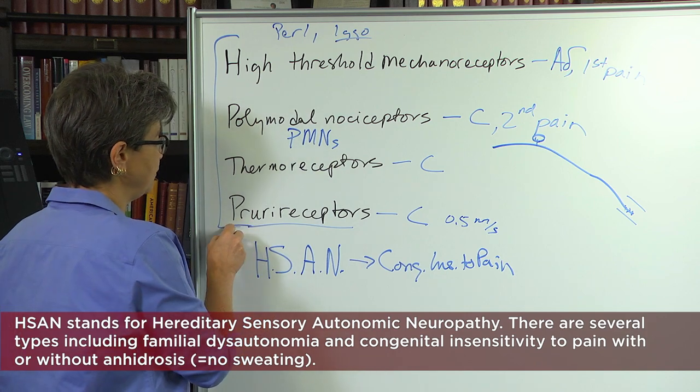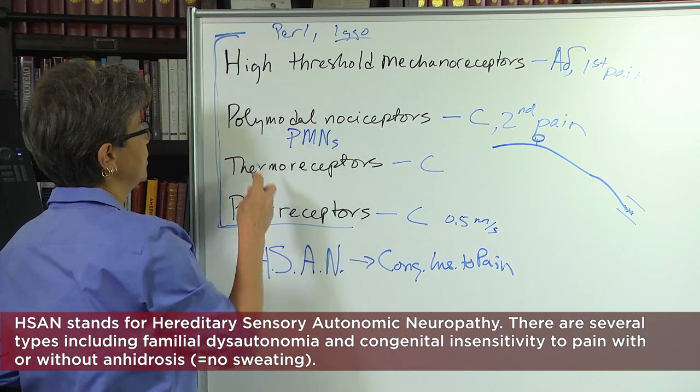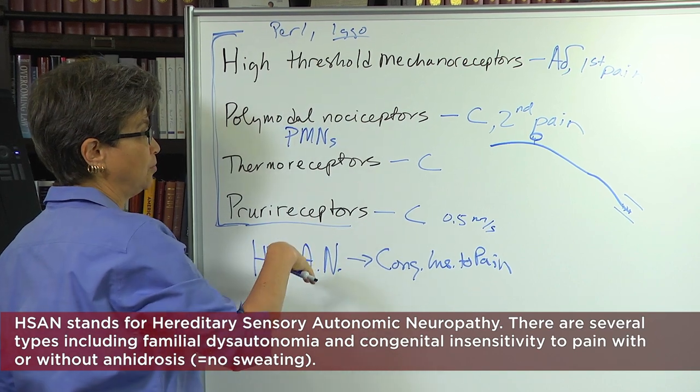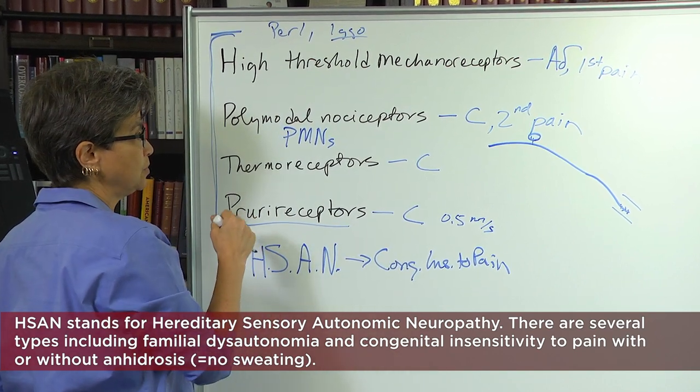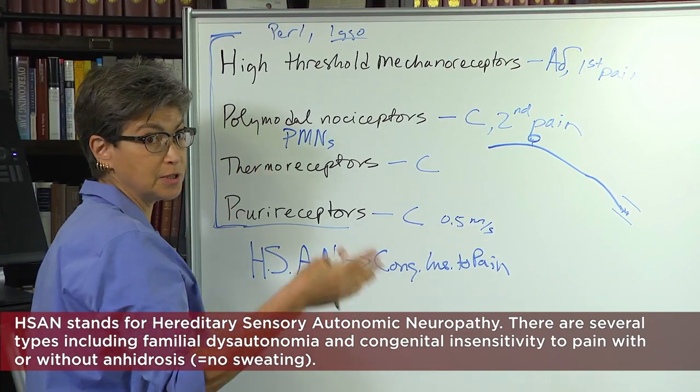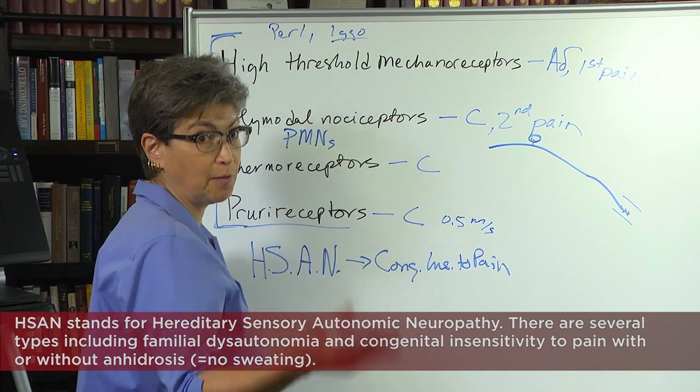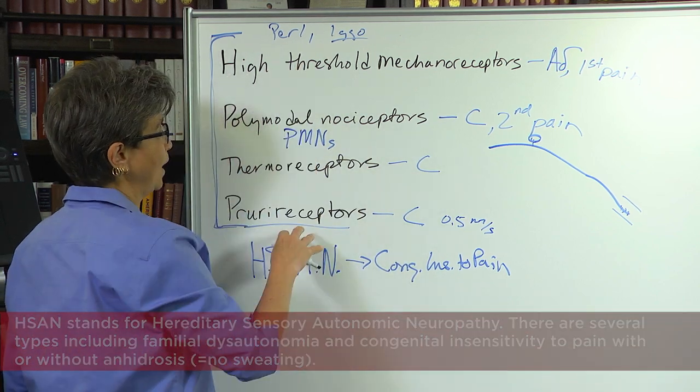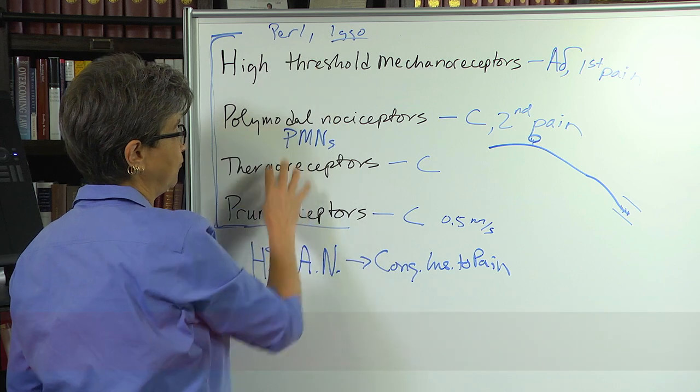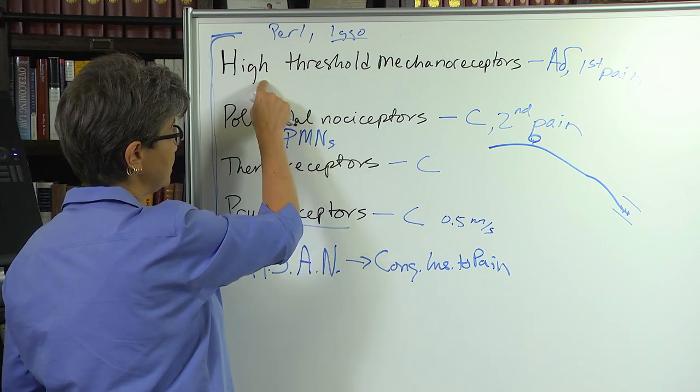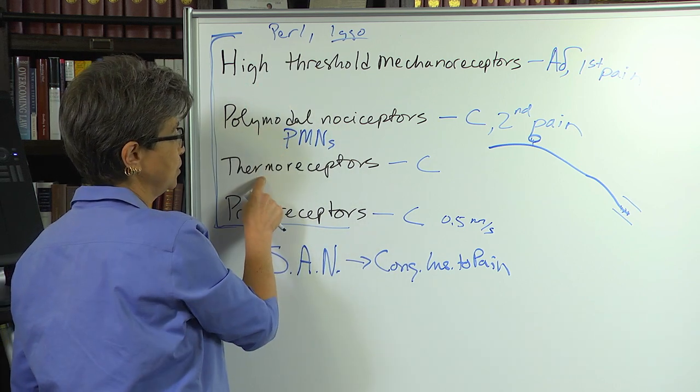Because all of these are developmentally related. They're all small diameter fibers, as opposed to the A-beta fibers that serve touch, proprioception, and vibration. And so when the developmental program for these goes off, these are also affected.